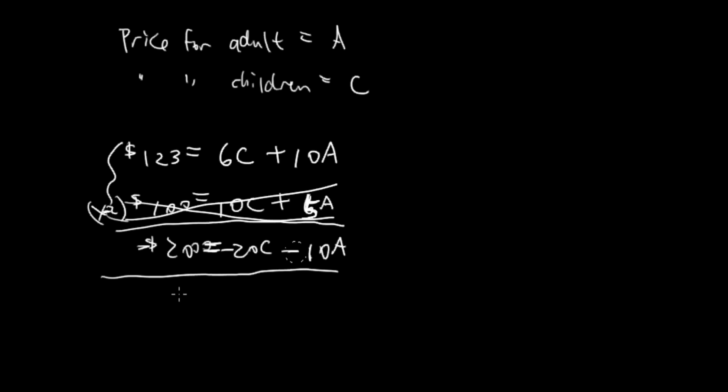We have negative seventy-seven dollars equals negative 14C, and the 10A cancel out.